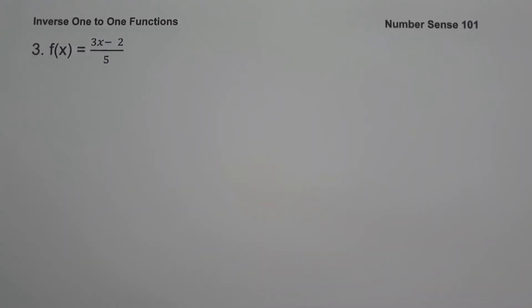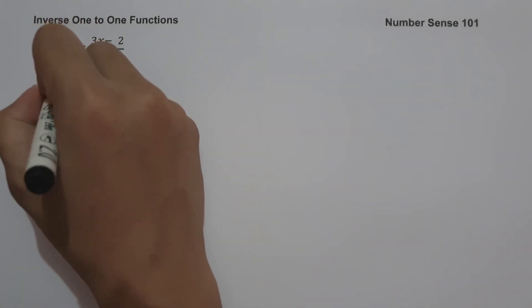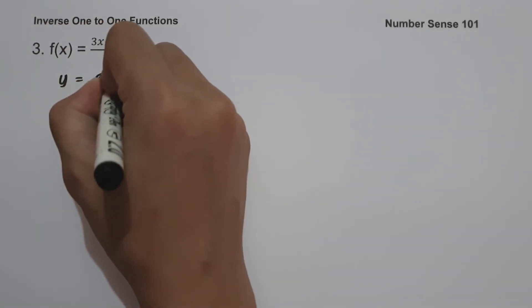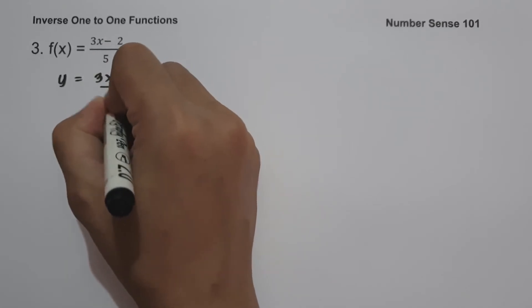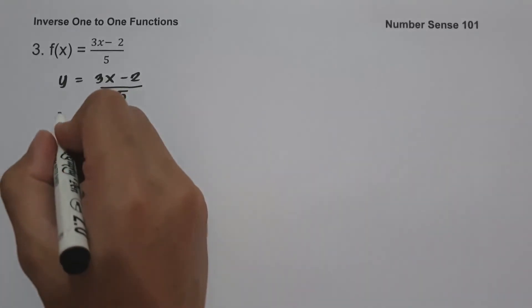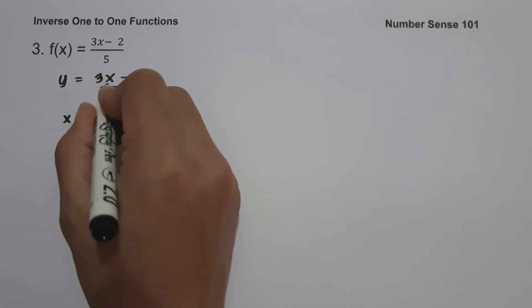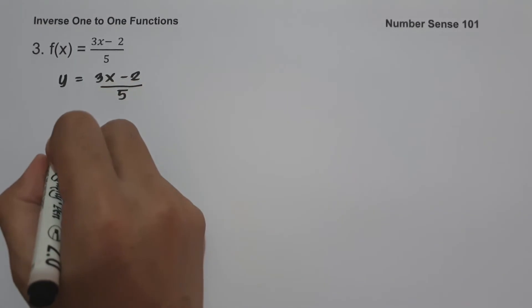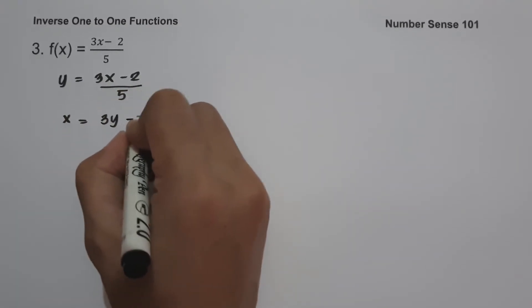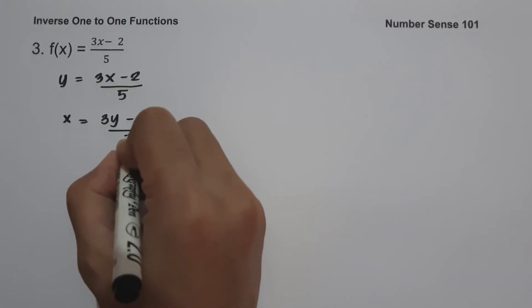On example number three, we have f(x) = (3x - 2)/5. Write the function as y = (3x - 2)/5. Interchange x and y variables — y becomes x and x becomes y — giving us x = (3y - 2)/5.